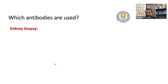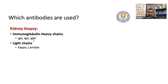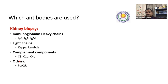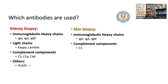Which antibodies do we use? This is an important point. When we talk about kidney biopsy, we use three heavy chains: IgG, IgA, and IgM. We use two light chains: kappa and lambda. We use complement components C3, C1Q, and C4D. C4D is used for antibody-mediated rejection, and C1Q is very helpful in the diagnosis of lupus nephritis.